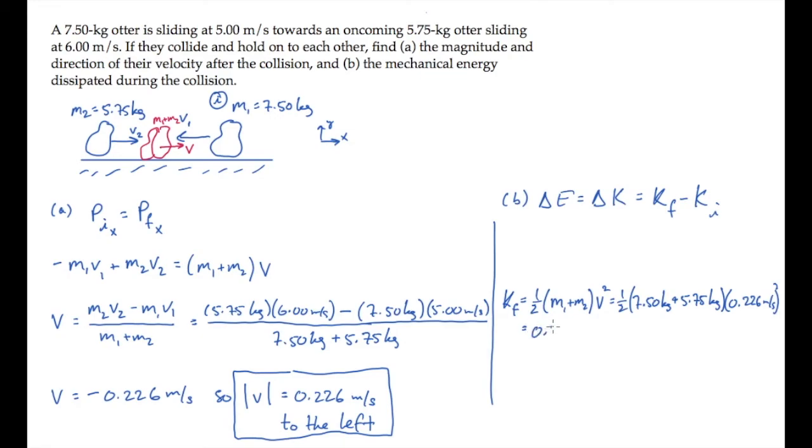The initial kinetic energy, the kinetic energy in the system before the collision, is the sum of the two otters' individual kinetic energies. So one half m1 v1 squared plus one half m2 v2 squared. When you substitute numbers and calculate this, you find that it equals 197 joules.